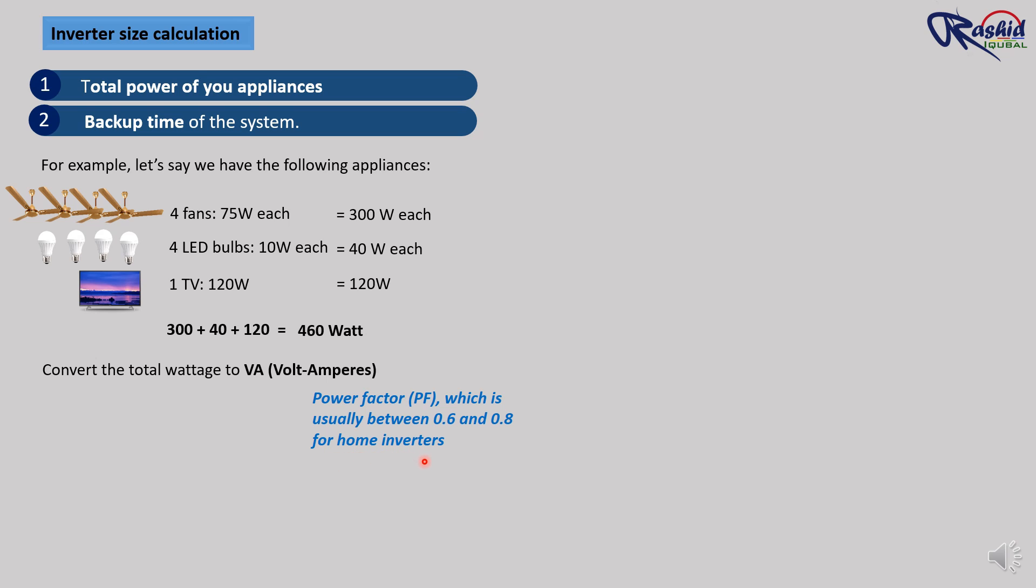If a manufacturer claims that their inverter offers 100% efficiency, that means they are misleading you. In reality, no inverter can be perfectly efficient. Most inverters operate with an efficiency of around 60 to 80%, which results in a power factor of approximately 0.7. So let's assume a power factor of 0.7.